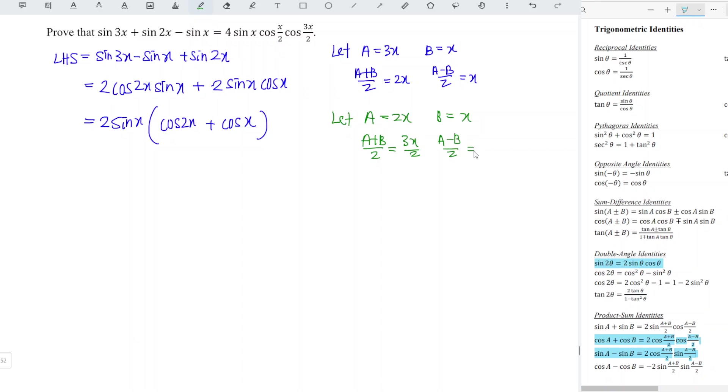Which means that we have 2 sin x. Refer to the formula we have 2 there, so we write 2 cos of a plus b, so 3x over 2 cos x over 2.